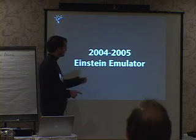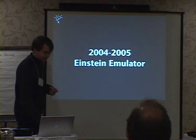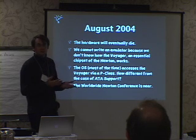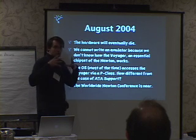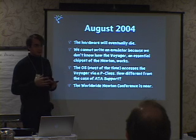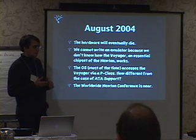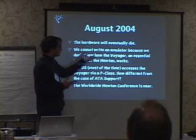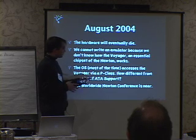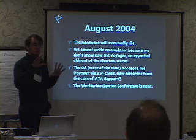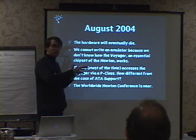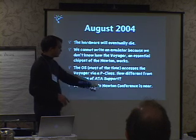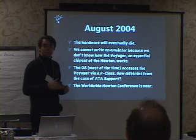Now I'm going to present the 2004–2005 Einstein Emulator. In August 2004, what we considered was that the hardware will eventually die — my Newton still works, but how long? We cannot emulate it because we don't know how the chipset inside the Newton called the Voyager works. There is no documentation; it was designed by Cirrus for Apple Computer on contract. They refused to design any more Cirrus chipsets, so we cannot make new Newtons, and they refused to give us documentation so we can't write an emulator. But I noticed that the operating system, most of the time, talks to the Voyager chipset through a P-class — there is an interface. Just the same way I wrote an implementation for the storage interface, we could write an implementation for the Voyager and have a system that works with different chipsets, like an emulator. The World War Newton conference was near — August 2004, for September 2004 — so we started coding.